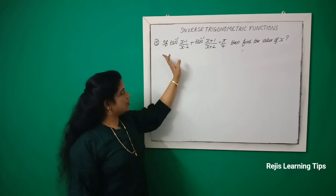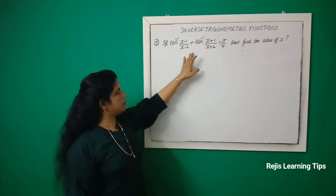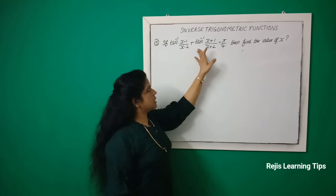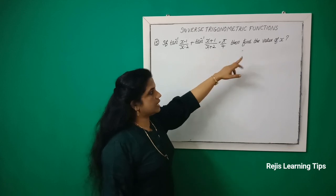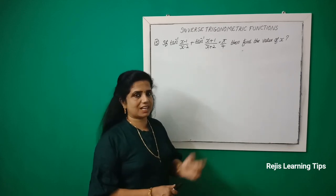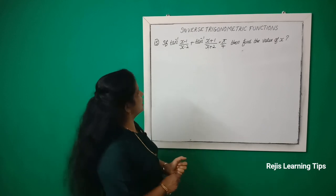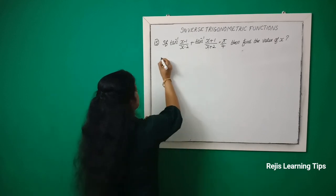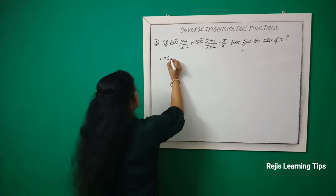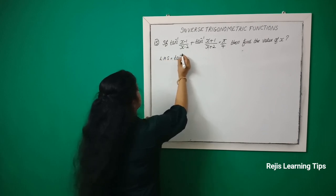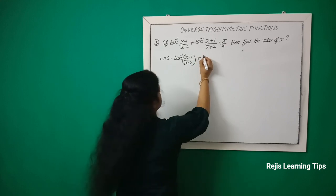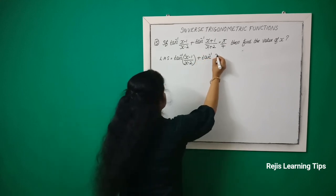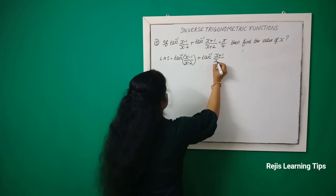Now question 14: tan⁻¹((x−1)/(x−2)) + tan⁻¹((x+1)/(x+2)) = π/4. Find the value of x. Let x = tan⁻¹((x−1)/(x−2)) + tan⁻¹((x+1)/(x+2)).